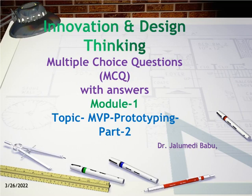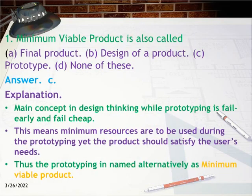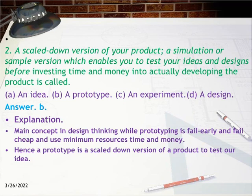Question 1: Minimum Viable Product is also called: a) a final product, b) design of a product, c) prototype, d) none of these. Answer: C. Explanation: The main concept in design thinking while prototyping is 'fail early and fail cheap.' This means minimum resources are to be used during prototyping, yet the product should satisfy the user's needs. Thus, prototyping is named alternatively as Minimum Viable Product.